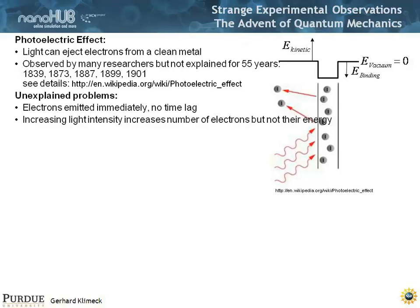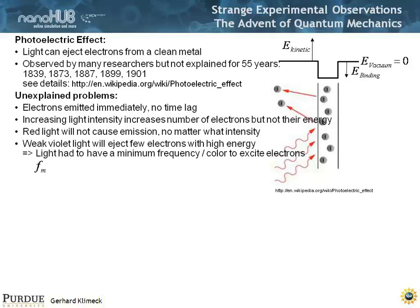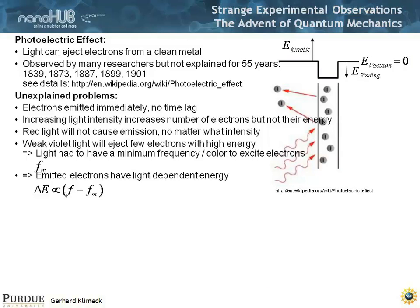That was also not quite understood. And also, if you shine red light onto this particular metal, it will not cause emission, no matter how intense you make the light. Red light didn't cut it, even if you put in a lot of energy — these electrons still wouldn't come out. But weak violet light will eject a few electrons with very high energy. What that really meant is that light had to have a minimum frequency or color to excite these electrons. They also found that the emitted electrons have a light-energy-dependent energy — the extra energy depends on the difference of the actual frequency of the light coming in minus this minimum energy.